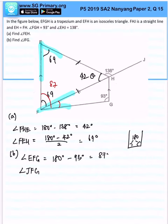Sorry. To find angle JFG, all we got to do is take 87 minus 69 degrees. And all in all, we will get 18 degrees as the answer for this question. Got it?